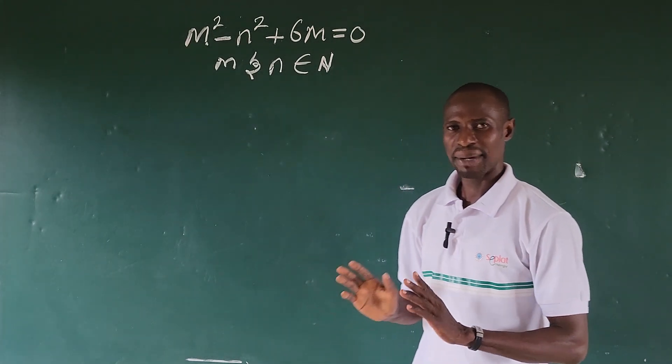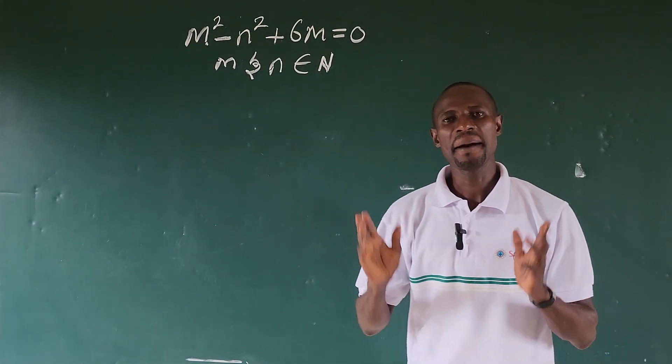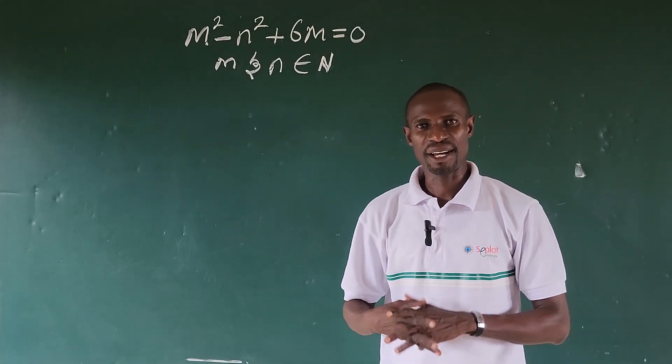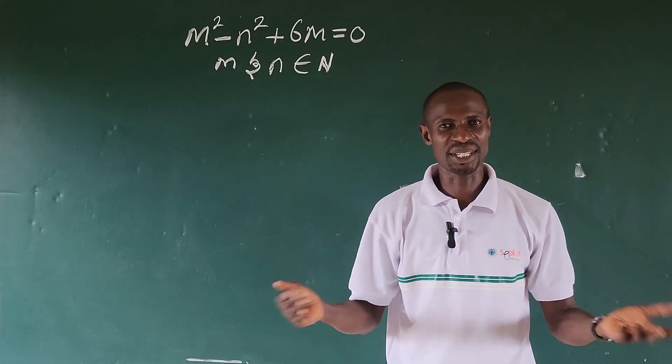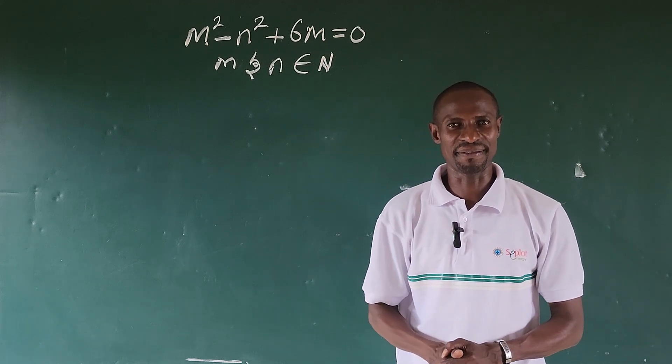We are told that m and n belong to a set of natural numbers, so how do we solve for the values of m and n?